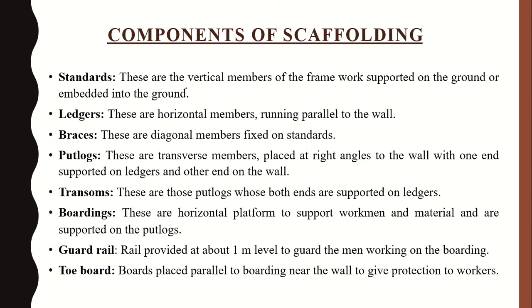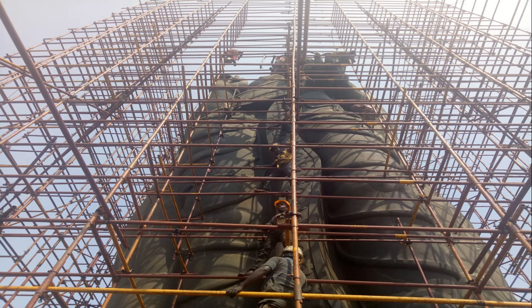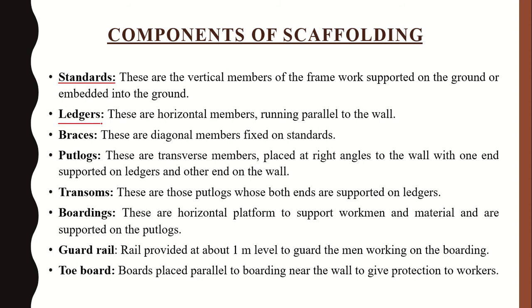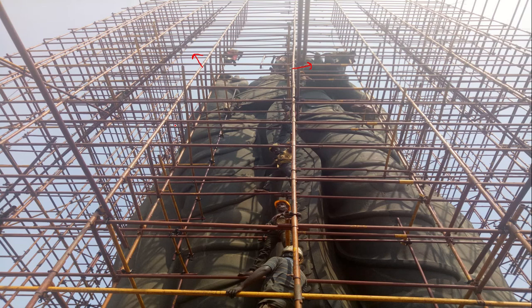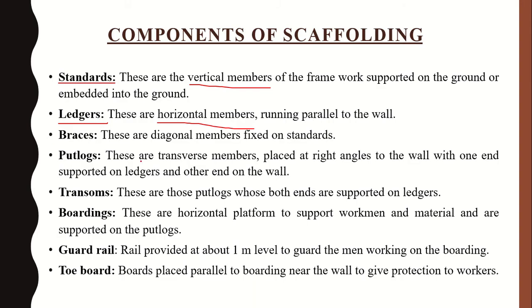The first component is standards — these are the vertical members of the framework, either resting on the ground or embedded in it. Next are ledgers, which are the horizontal members running parallel to the wall of the structure being built.